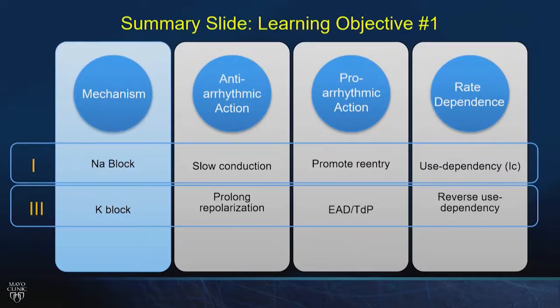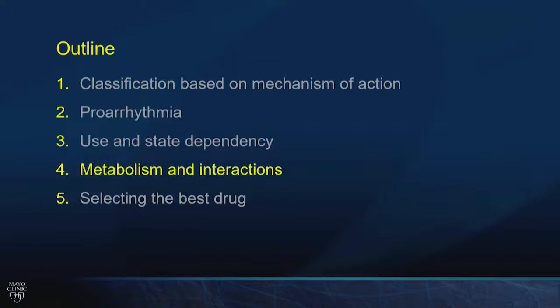Summary: Class 1 agents — sodium channel blockers — slow conduction, which helps with arrhythmias. But if you go too far, you promote reentry and get proarrhythmia. They have use-dependent effect, so they're pill-in-the-pocket agents. Class 3 agents — potassium channel blockers — make tissue more refractory by prolonging repolarization. They result in long QT but can cause early after depolarizations and torsade, with reverse use dependence. That middle-of-the-night phone call anchors you to bradycardia and reverse use dependence.